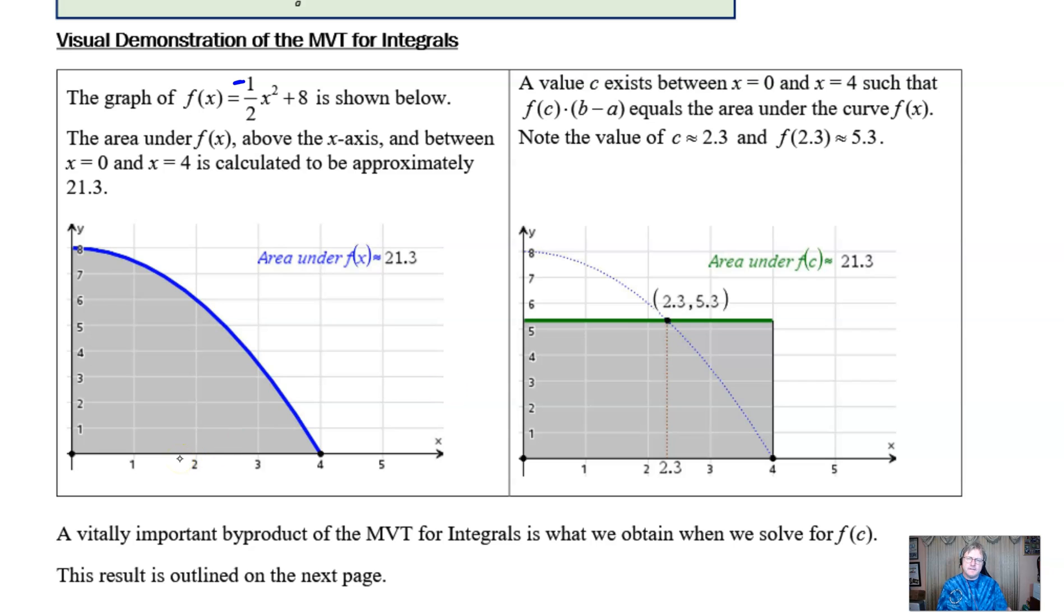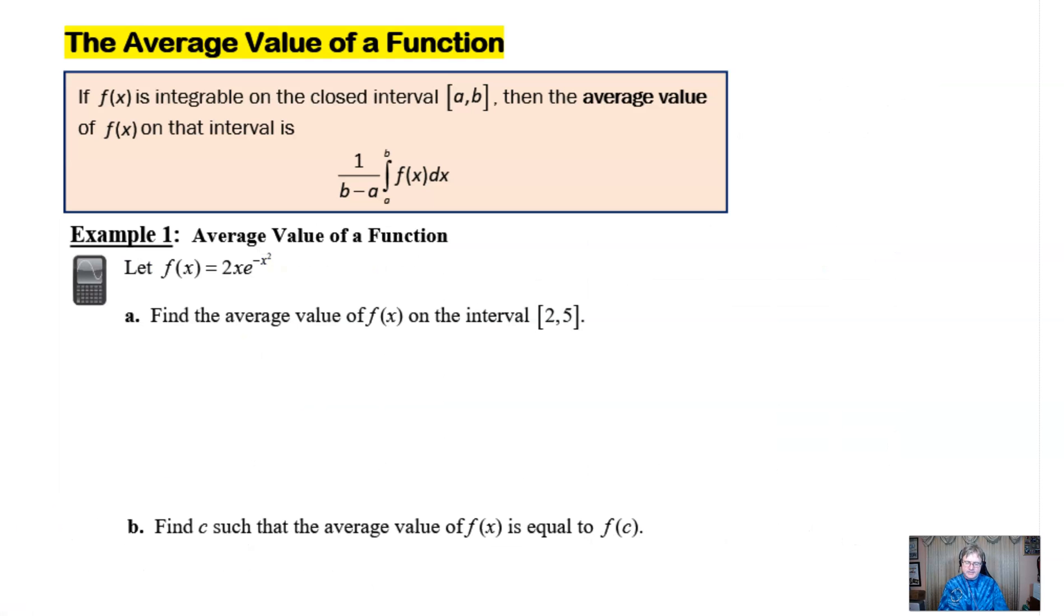A vitally important byproduct of the mean value theorem for integrals is what we see on this next page. This is what we must know and know well for the AP calculus exam. And that is the average value of a function. It simply says if f(x) is integrable on the closed interval a to b, then the average value of f(x) is defined to be 1 over b minus a times the integration of f(x) from a to b.